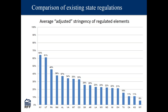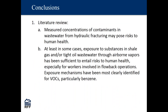Having cataloged existing regulations, some of which we can assign a stringency to — for example, the pit liner thickness requirement — the thicker the liner required, the more stringent the requirement in that state. We tried a rough ranking of the stringency of regulated elements in the different states. New York performs the best based on this particular ranking, and as many of you know, New York has banned hydraulic fracturing in the state, but their proposed regulations have the highest stringency. Pennsylvania and Utah do fairly well as well.